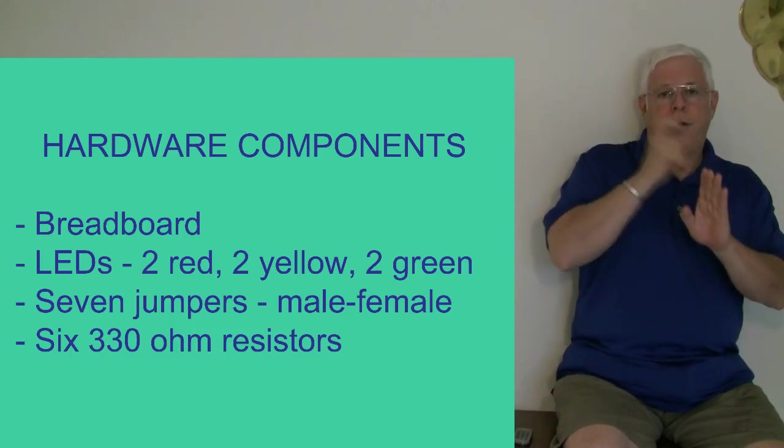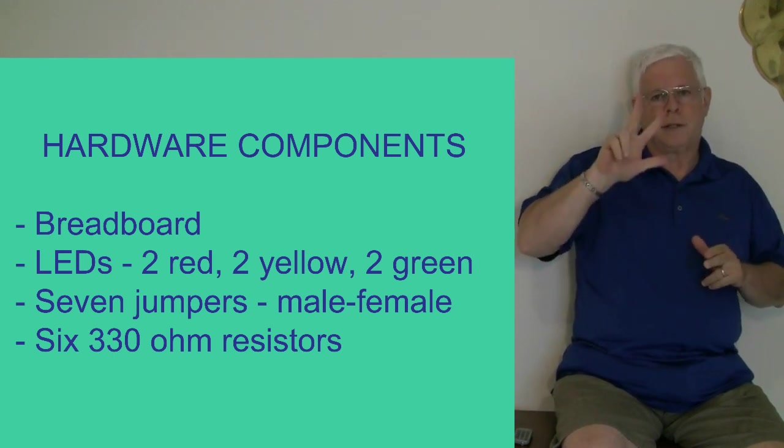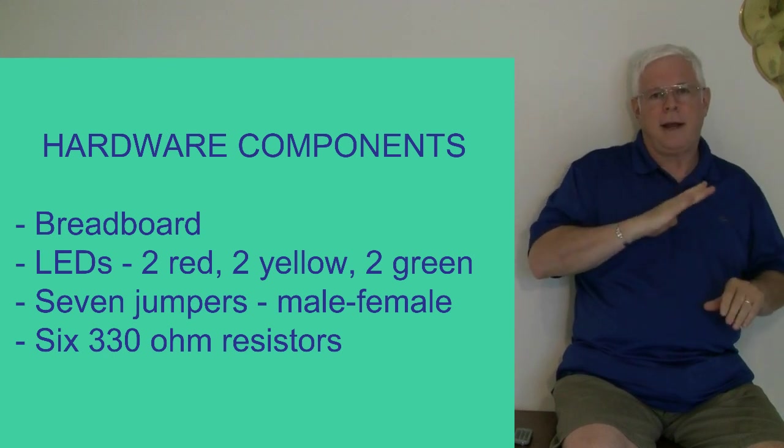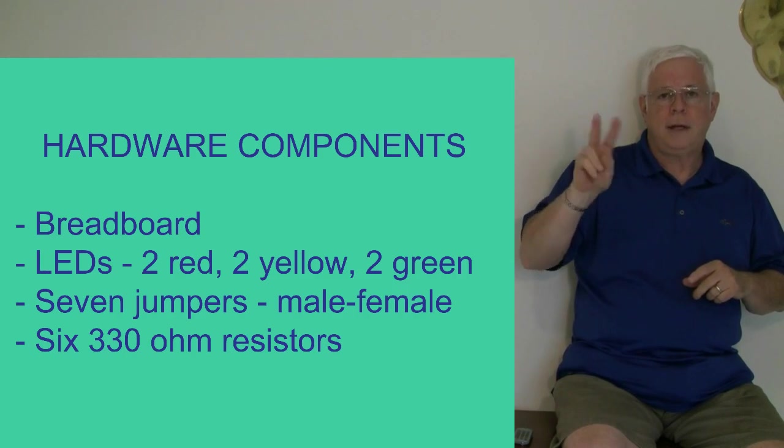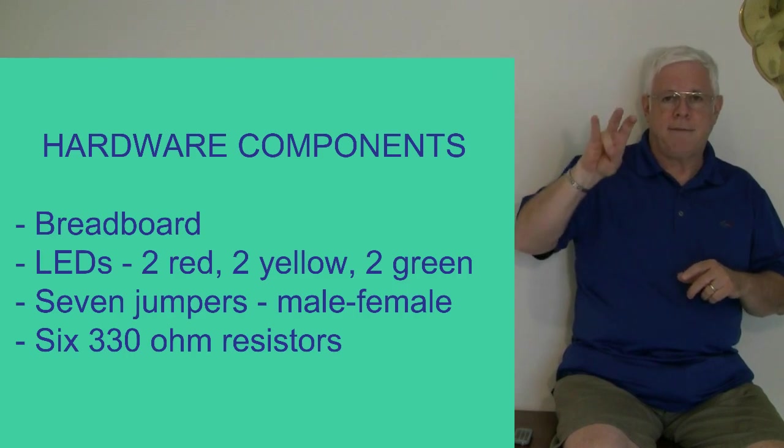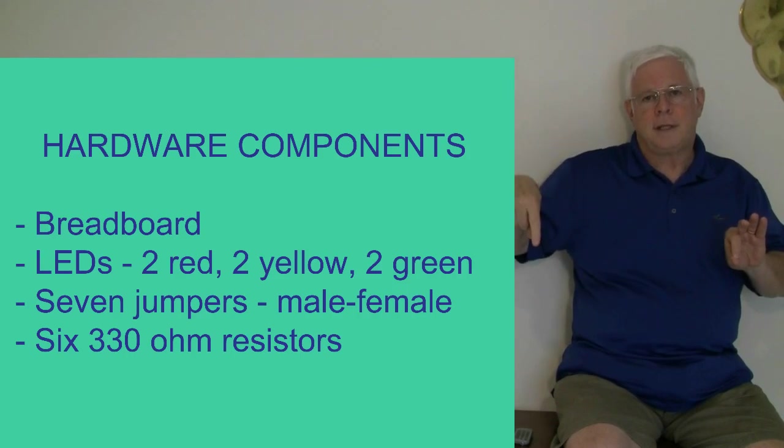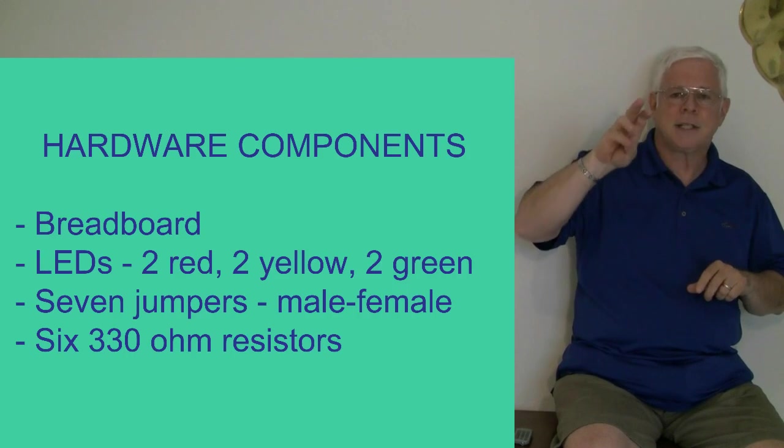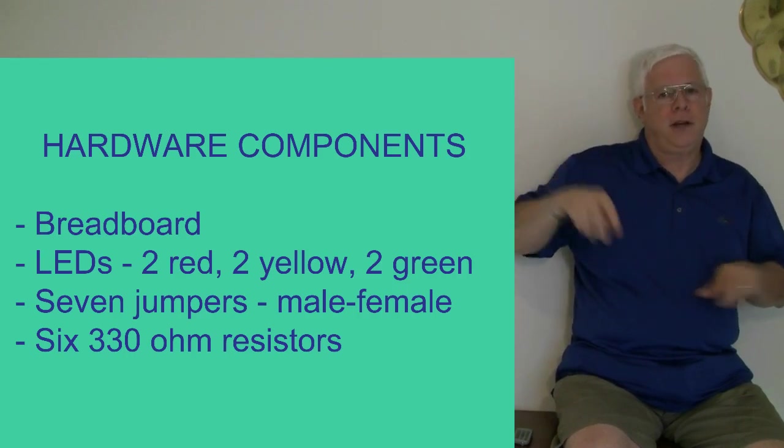For this project, you're going to need some things. You're going to need a breadboard. Ours is three by two inches, and that's fine. Then you're going to need six LEDs: two green, two yellow, and two red. And you're going to need seven jumper cables with a male connection on one end and a female connection on the other end, plus six 330-ohm resistors.